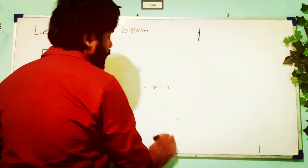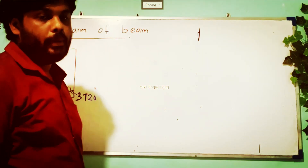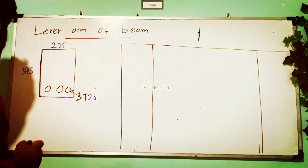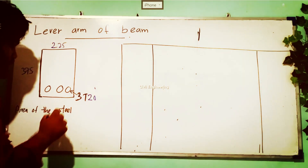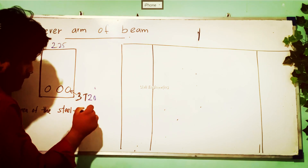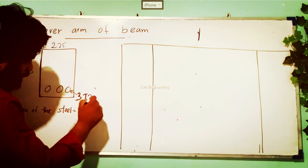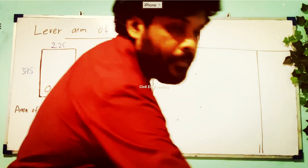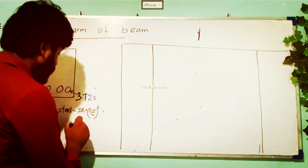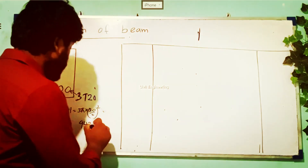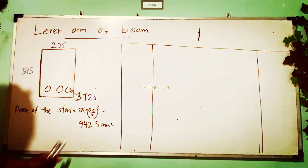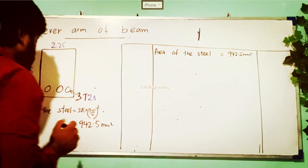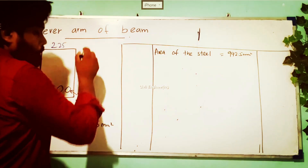In this video I will show how to find the lever arm following a few steps. Our first step is to find the area of the steel applied to the beam. The area of the steel is equal to 3 × π/4 × 20² — this is the supplied steel area — which gives approximately 942.5 mm².